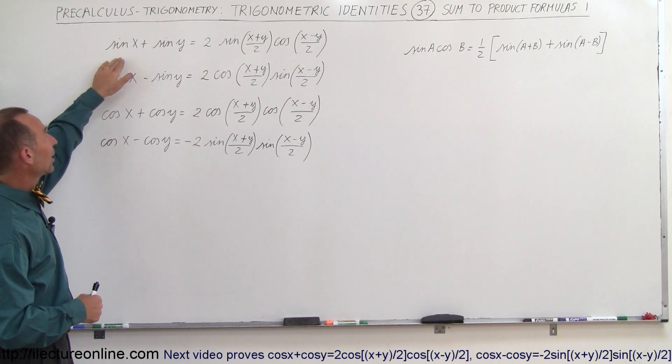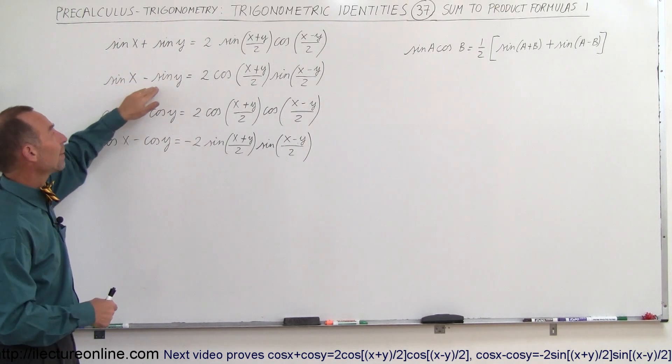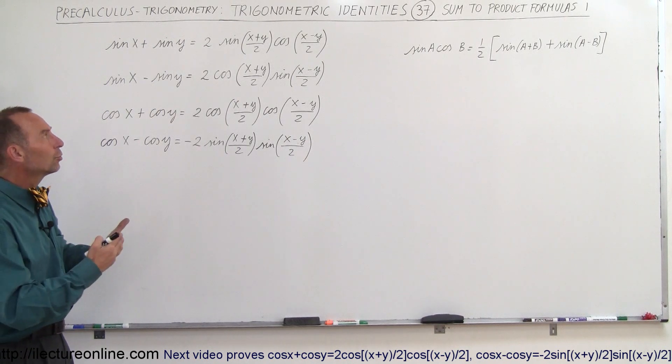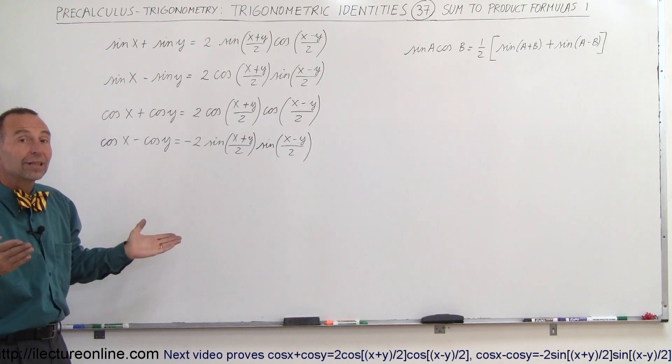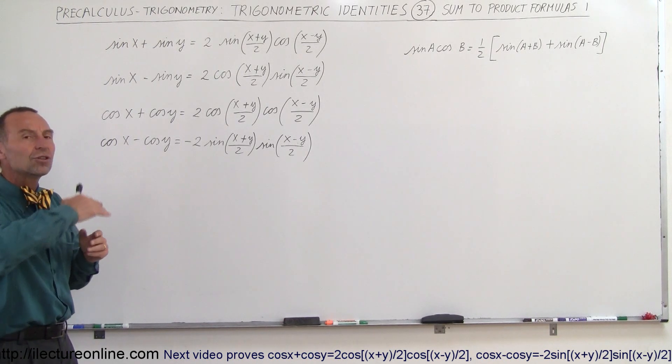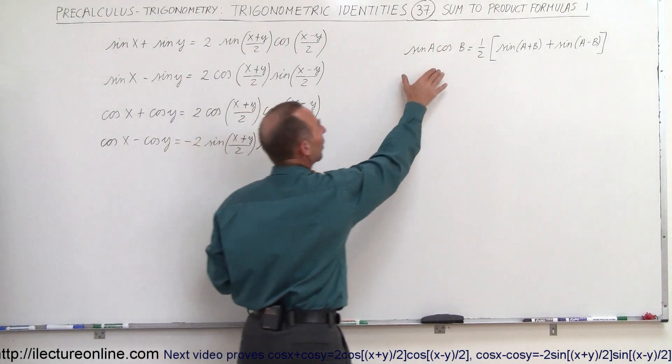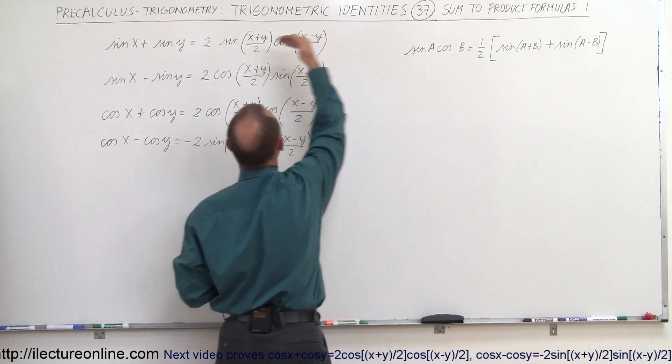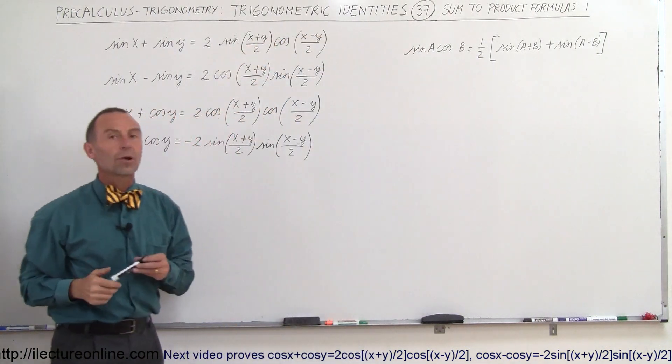Here we have the sine of x plus the sine of y or the sine of x minus the sine of y and what is that equal to in terms of x and y, converting that to a product of angles. In order to do that we're going to reverse engineer, going backwards from the product to sum equation and see how we develop the sum to product equations.